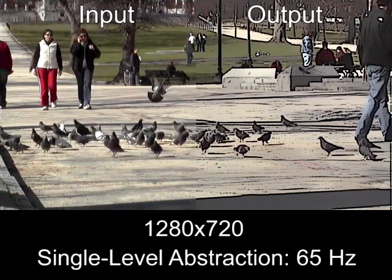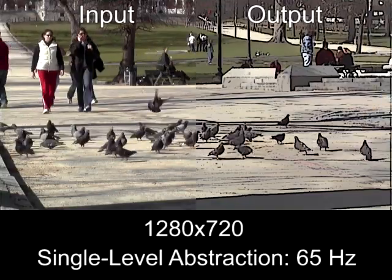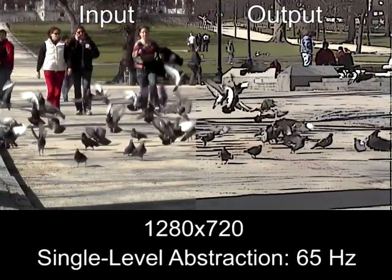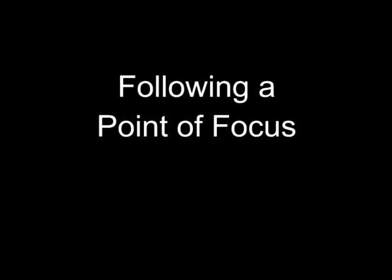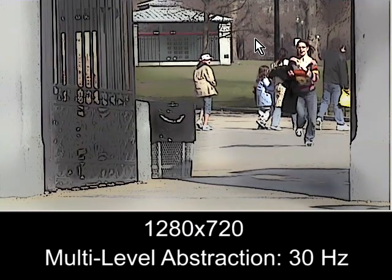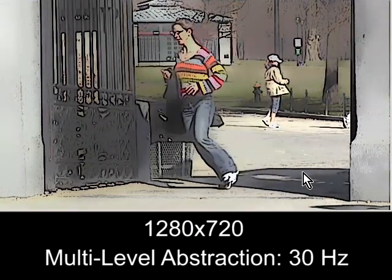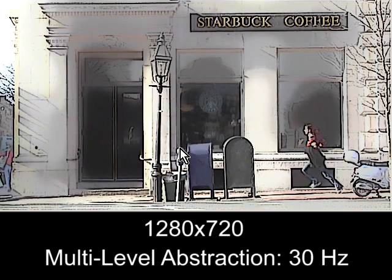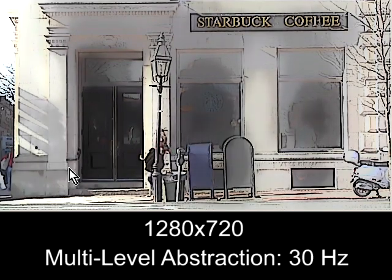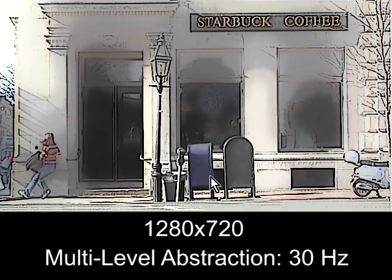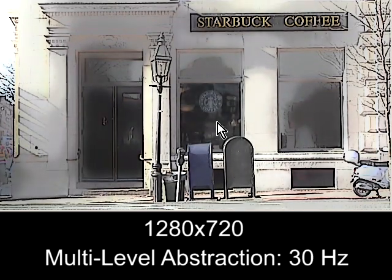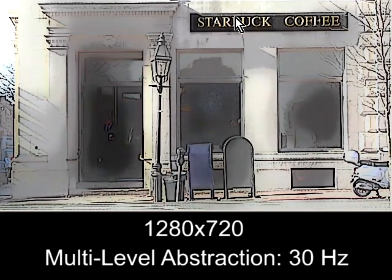We demonstrate the real-time video abstraction technique by Wienmuller and colleagues on HD video. We adapt real-time video abstraction to follow a point of focus, here controlled by the mouse pointer. Elements that are farther away from the point of focus are more abstracted.